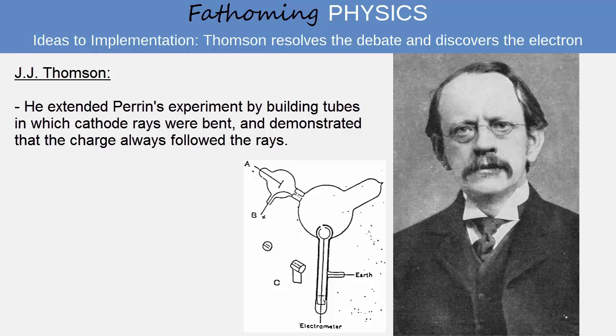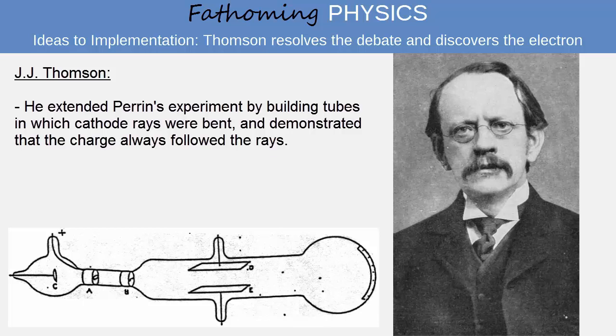J.J. Thompson repeated Perrin's experiment, but this time bent the cathode rays, demonstrating that no matter how the cathode rays were contorted, they carried negative charge with them. This, along with his demonstration of the deflection of cathode rays by charged electric plates in highly evacuated tubes, where screening didn't occur, finally settled the debate in favour of the explanation of cathode rays as a stream of charged particles.